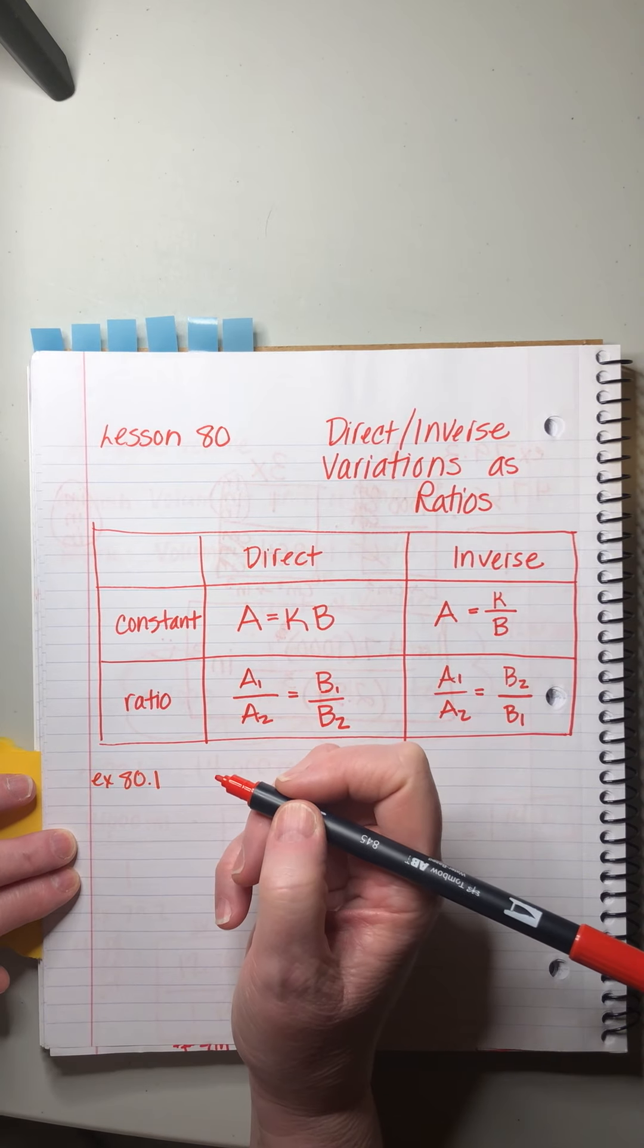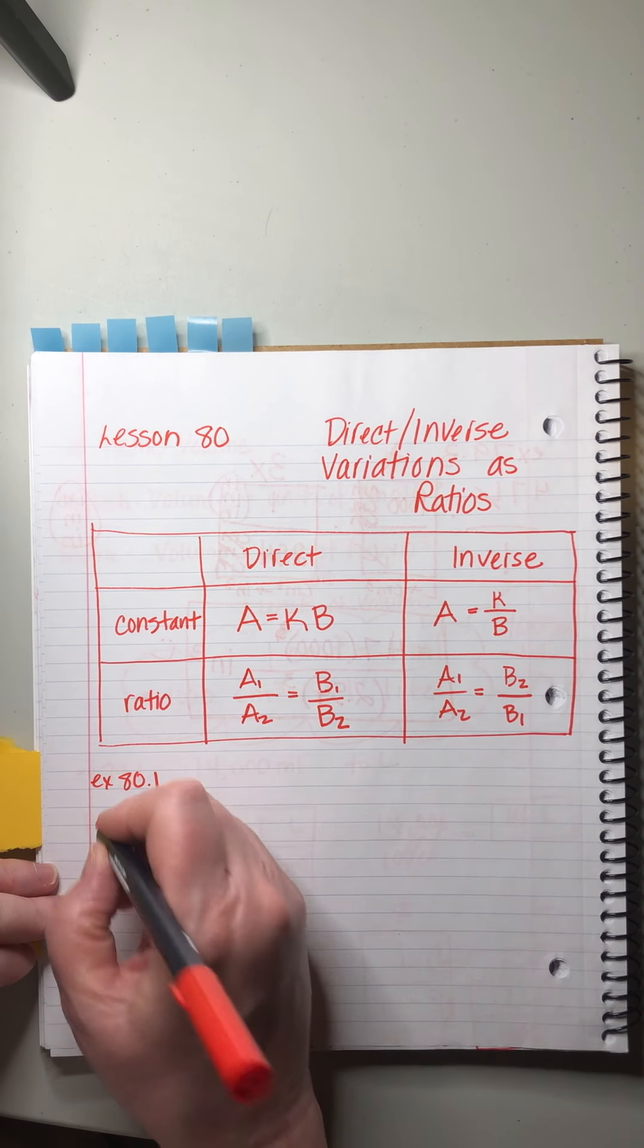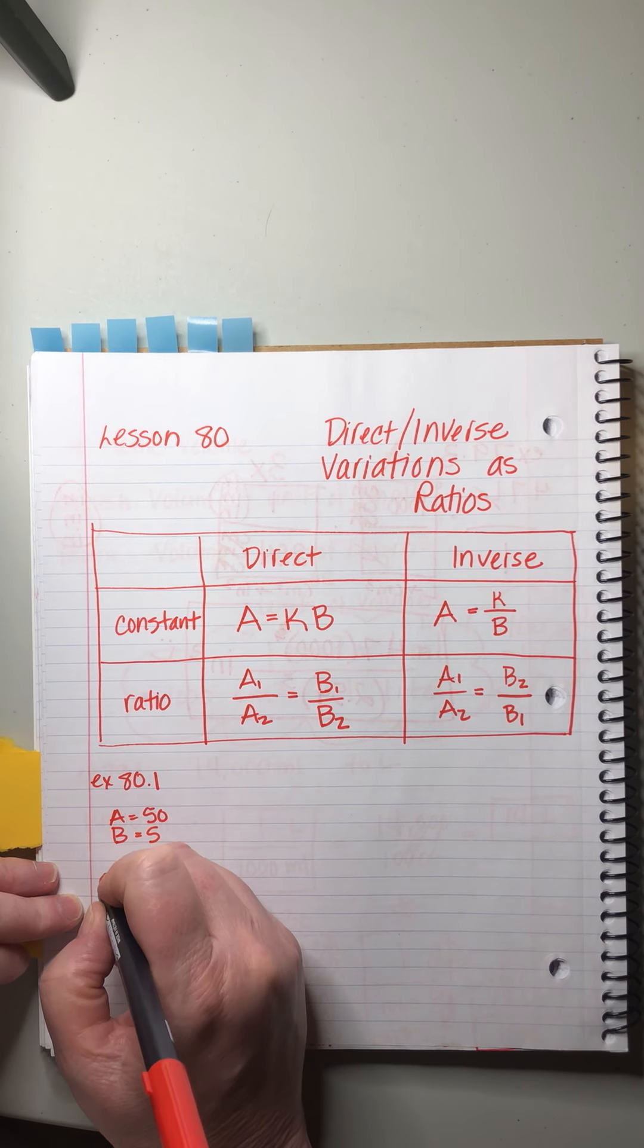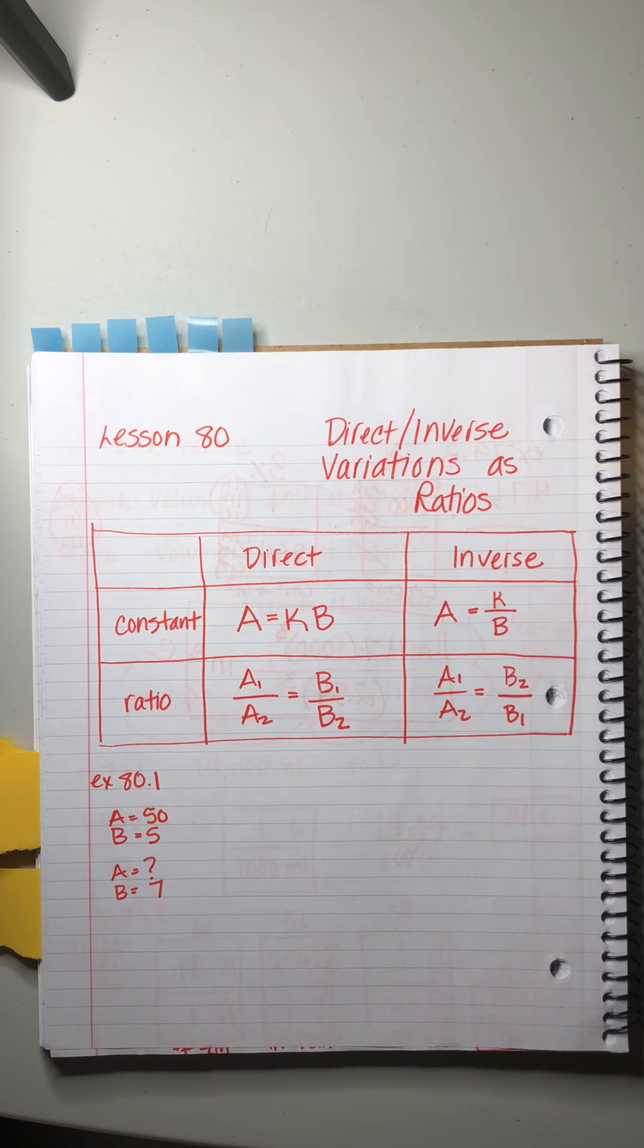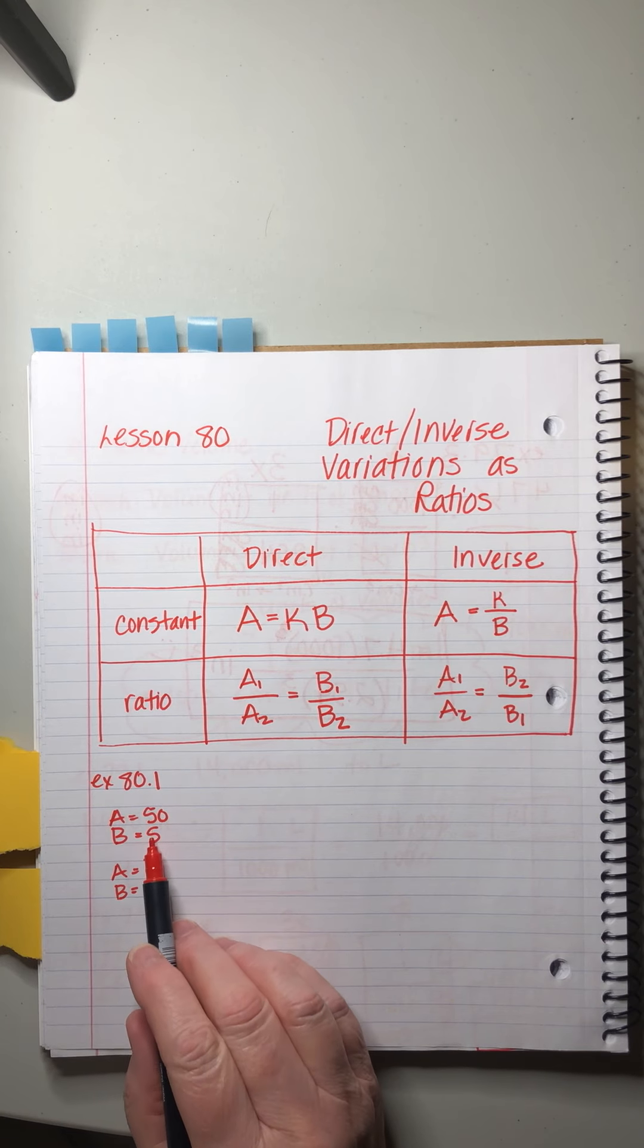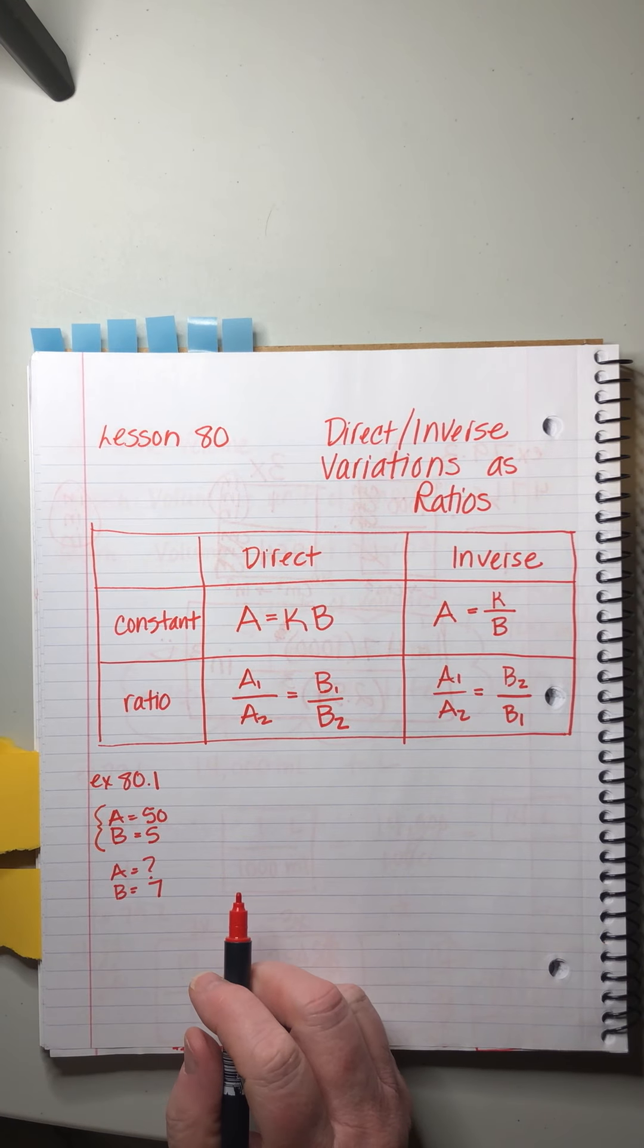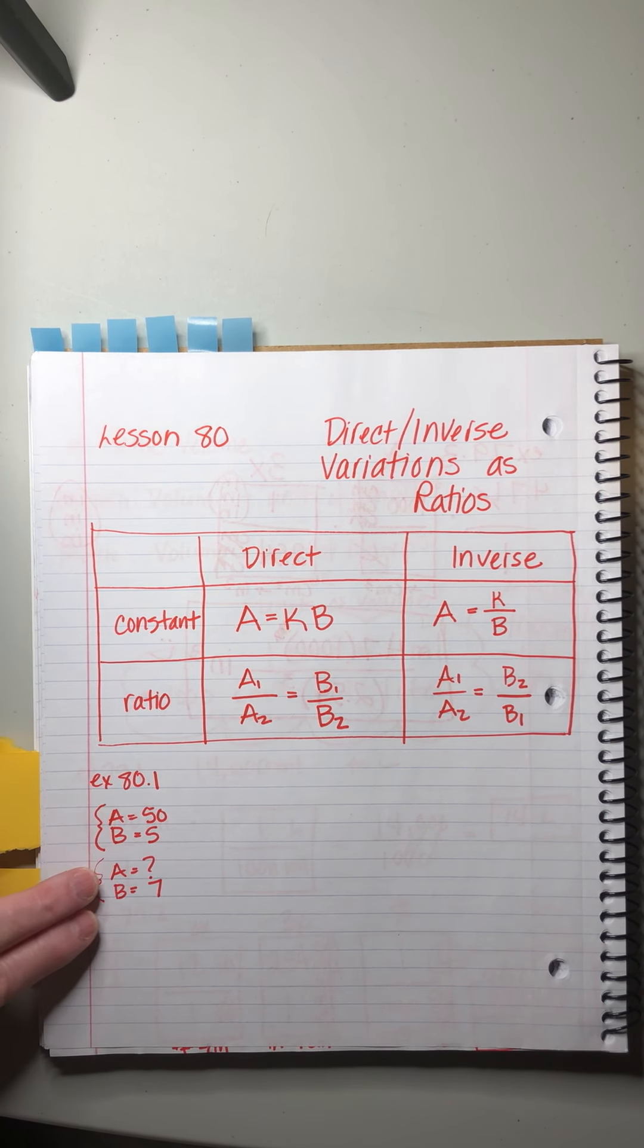Let's use these in an example so you can see what I'm talking about. A varies directly as B. That puts us in this column. If A is 50 when B is 5, what is the value of A when B is 7? There's no story. There's no dads eating pizza. There's no toddlers throwing toys on the ground. So it's just pure numbers. And they don't really tell us A1, A2, B1, B2. We have to figure that out. What they do tell us very clearly is that these two numbers go together and these two numbers go together. When, if A is 50 when B is 5, so these two we know are together. What is the value of A when B is 7? So these two go together.